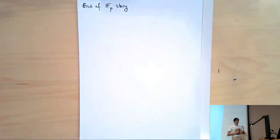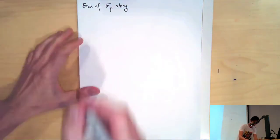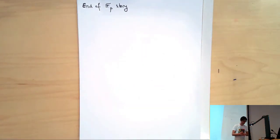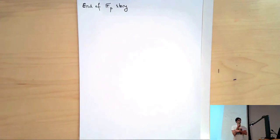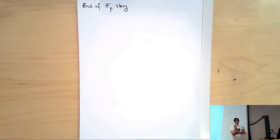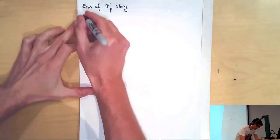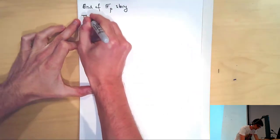We were analyzing FP algebras this morning, and I was telling you at the very end of the talk that we were going to have some relation to crystalline cohomology, which mimicked the sort of relationship that we saw in the second talk between classical periodic cyclic cohomology and de Rham cohomology.